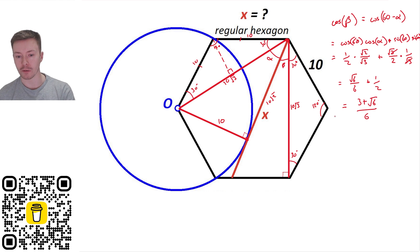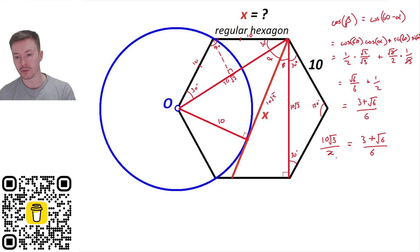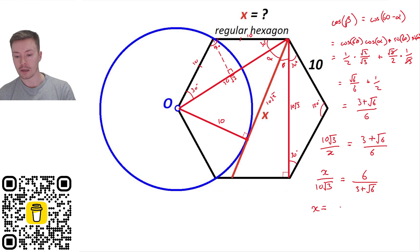So cos beta = (3 + √6) / 6. Using the triangle, cos is adjacent over hypotenuse: 10√3 / x = (3 + √6) / 6. Flipping both fractions: x / 10√3 = 6 / (3 + √6). Multiplying both sides by 10√3 gives x = 60√3 / (3 + √6).